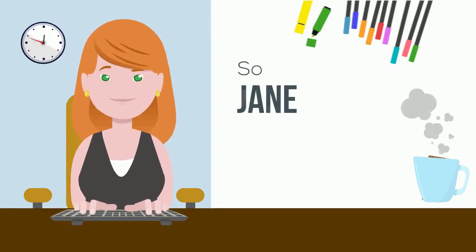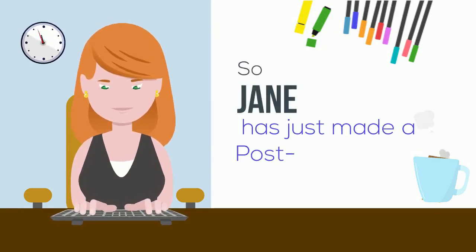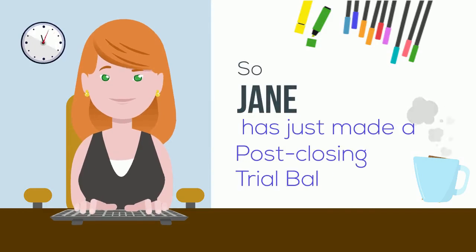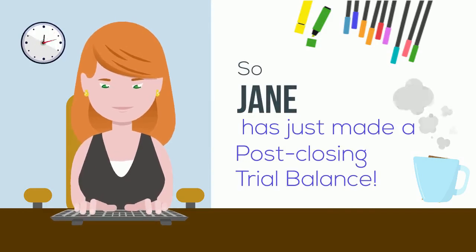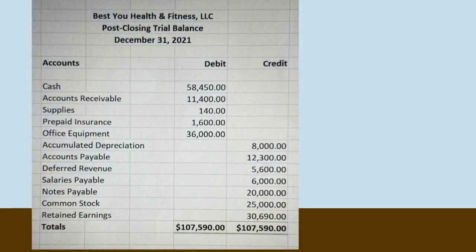Great news, everybody. Jane has just made a post-closing trial balance. Jane has made the post-closing trial balance with her permanent accounts: assets, liabilities, and stockholders' equity. Remember, revenue, expenses, and dividends have all been zeroed out. When we make a post-closing trial balance, be sure to check and make sure your debit dollars equal your credit dollars. In this example, they do. Way to go, Jane!